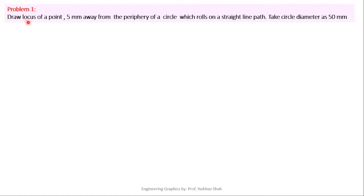Problem 1: Draw the locus of a point 5 mm away from the periphery of a circle which rolls on a straight line path. Take circle diameter as 50 mm. Here we have to draw the locus of a point 5 mm away from the periphery of the circle, which means our point is outside the periphery of the circle. If the point is outside the periphery, the curve generated by tracing that point will be a superior trochoid. It rolls over a straight line path, so it is a special case of your cycloid, just like your inferior trochoid. This is the second case of your cycloid — a superior trochoid — where our point would be outside the periphery of a circle.